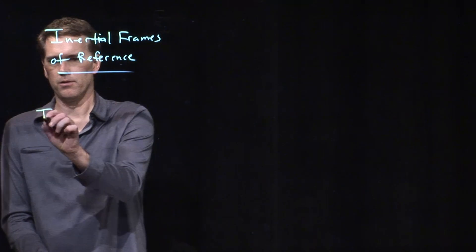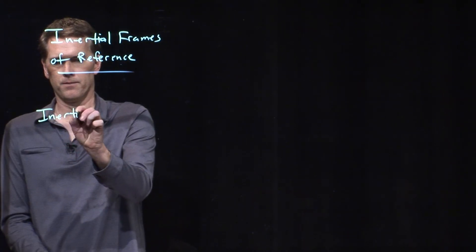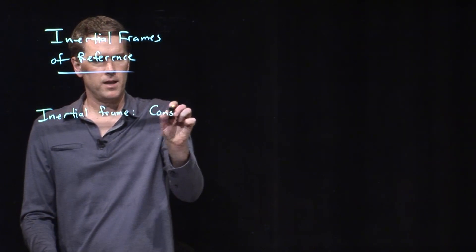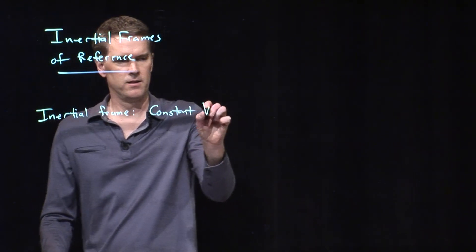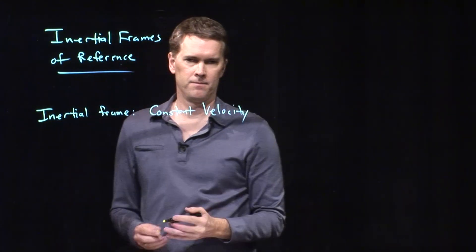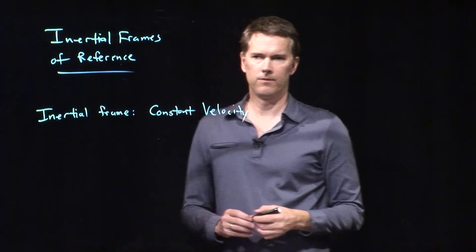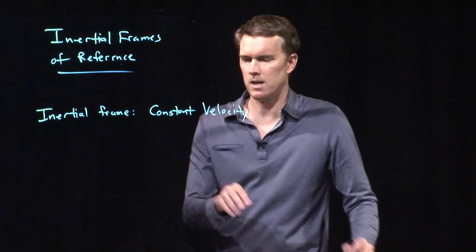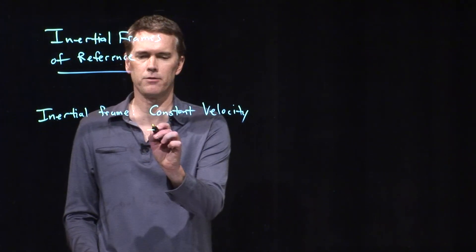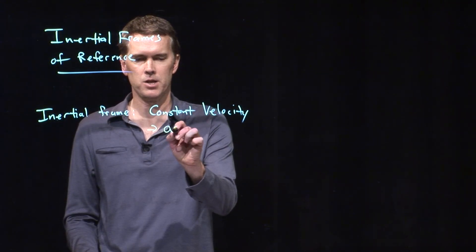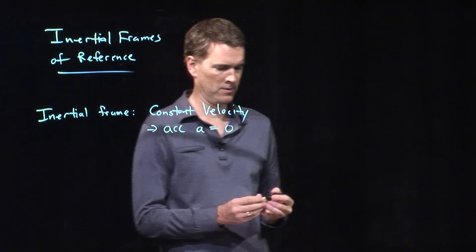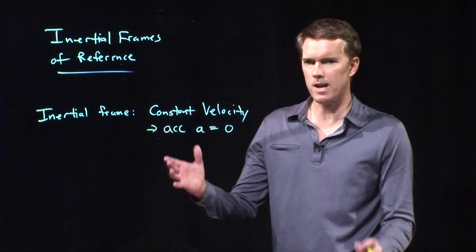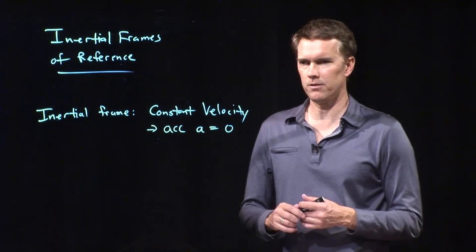What this means is the following: an inertial frame is one that has constant velocity. Your inertial frame has to have constant velocity. If there is constant velocity, that of course means acceleration a is equal to zero in that frame. Whatever frame you are in, you cannot have any acceleration.